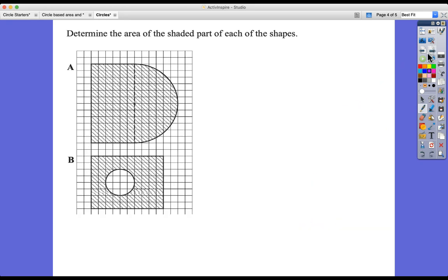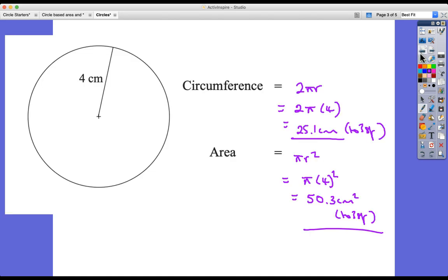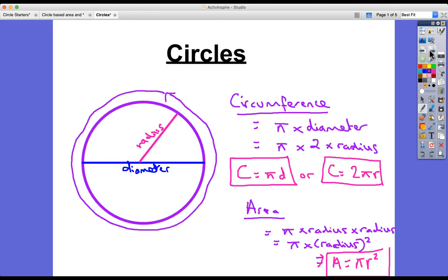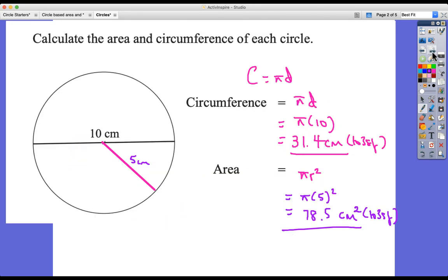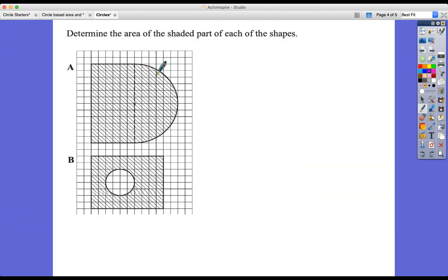Determine the area of the shaded part of each of the shapes. Now we're getting a bit more interesting. We've got the main skills, we know how to do these. First, let's identify this as a compound shape. We've got a rectangle and a semicircle stuck on the side.